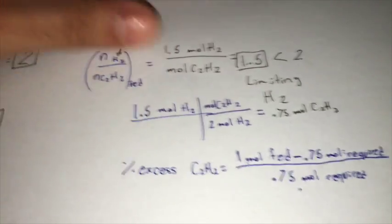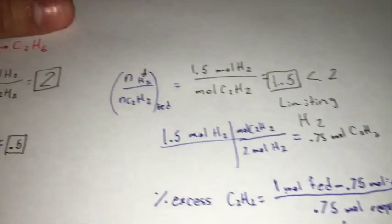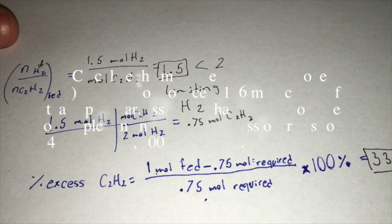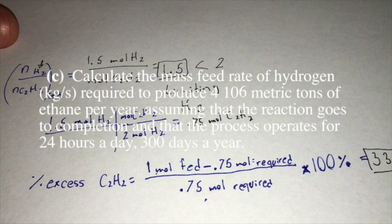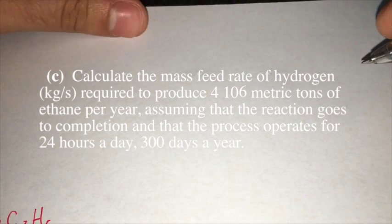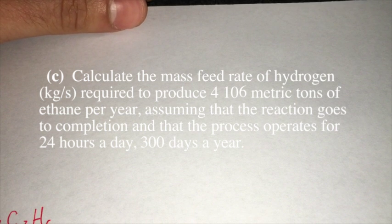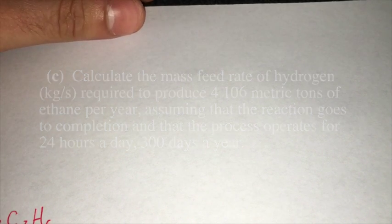And that's how we calculate the percent excess of C2H2. Now we move on to part C. We convert the ethane mass in tons per year to kilograms per second.